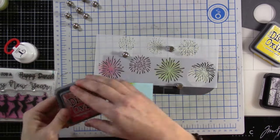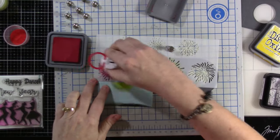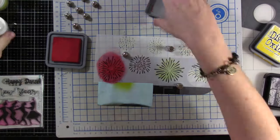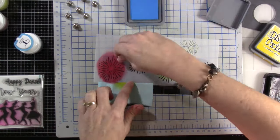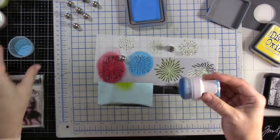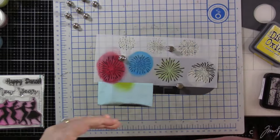So we're going to use some lumberjack red for our first one, blending that right over that first set of fireworks. Then our second one we'll blend on some salty ocean, it's a nice pretty bright blue. And then I figure we already have our mustard seed out and that's a pretty yellow, so we're going to use that on our last set of fireworks.